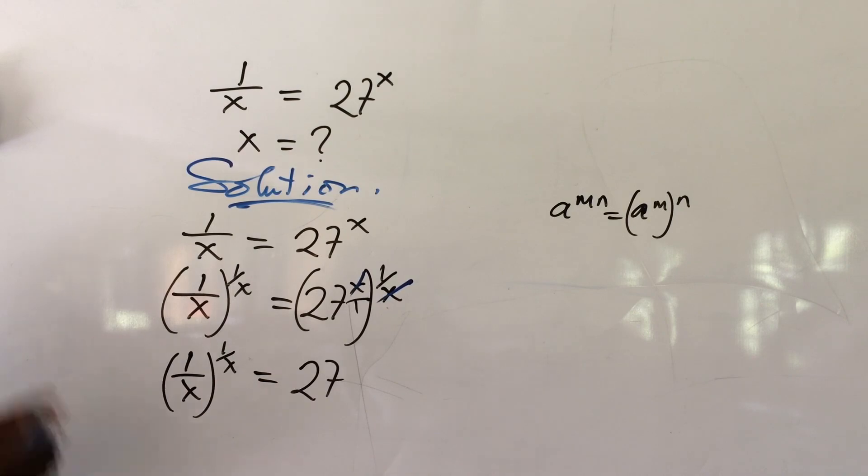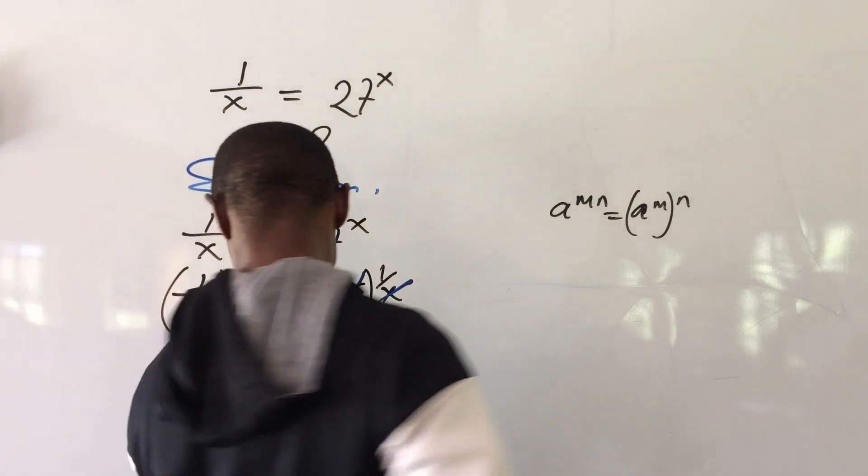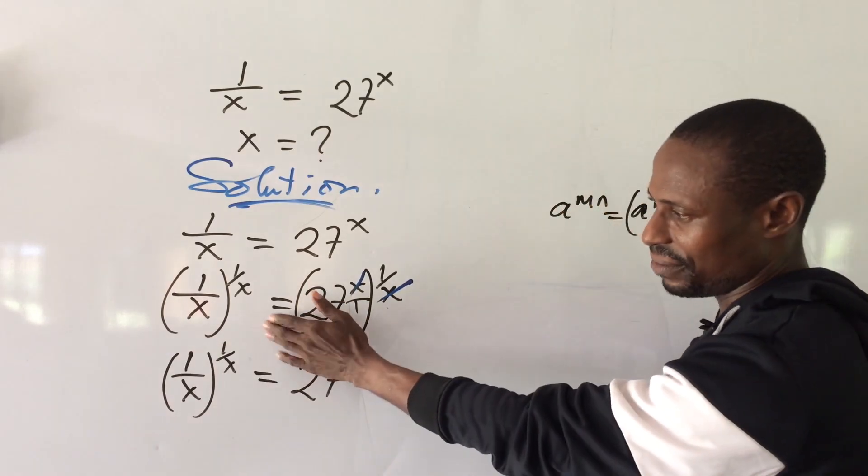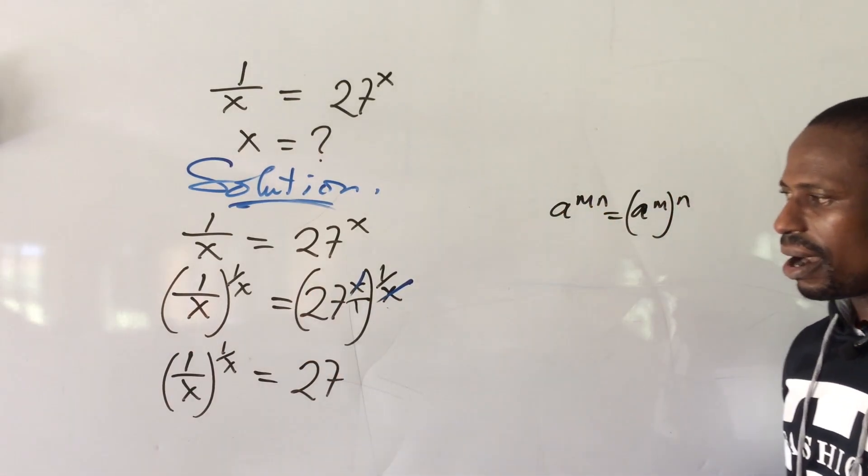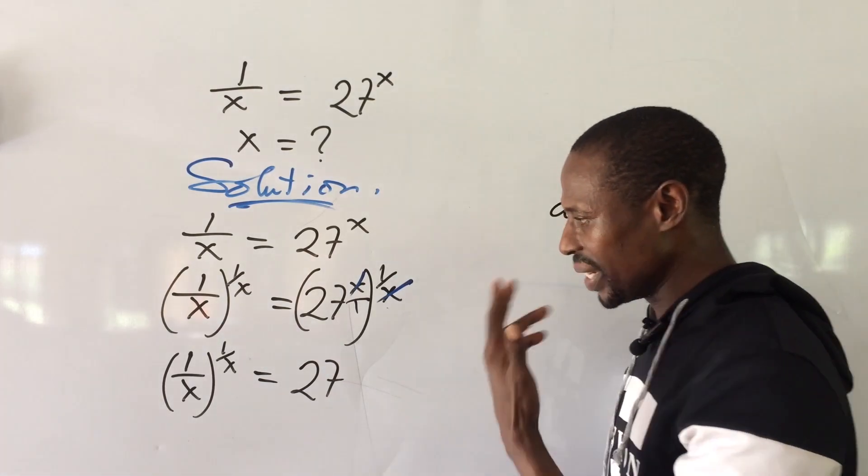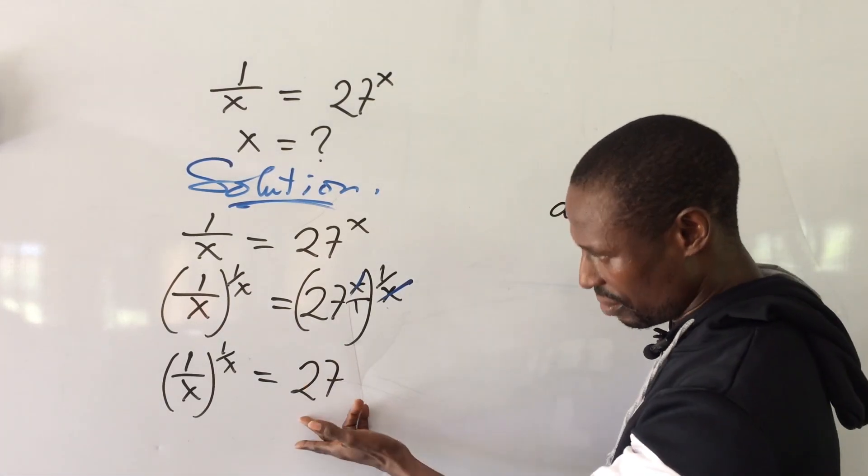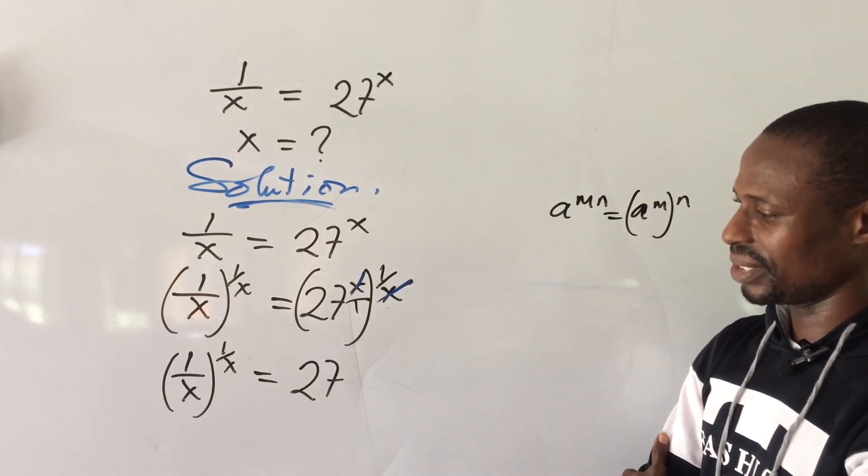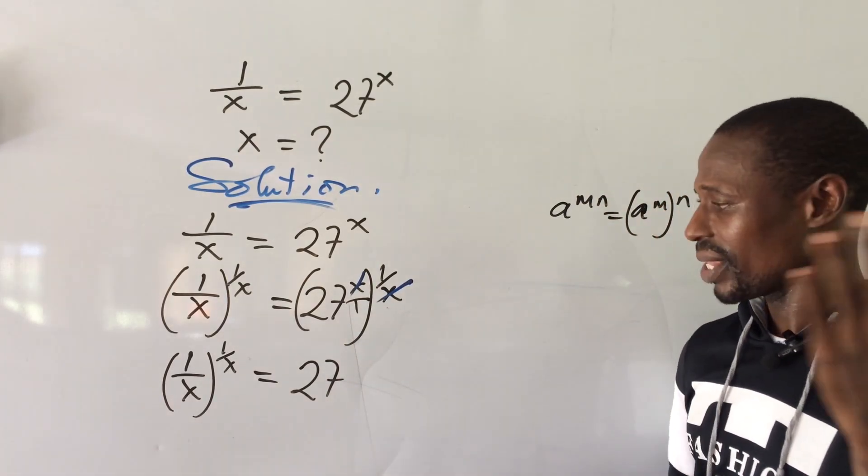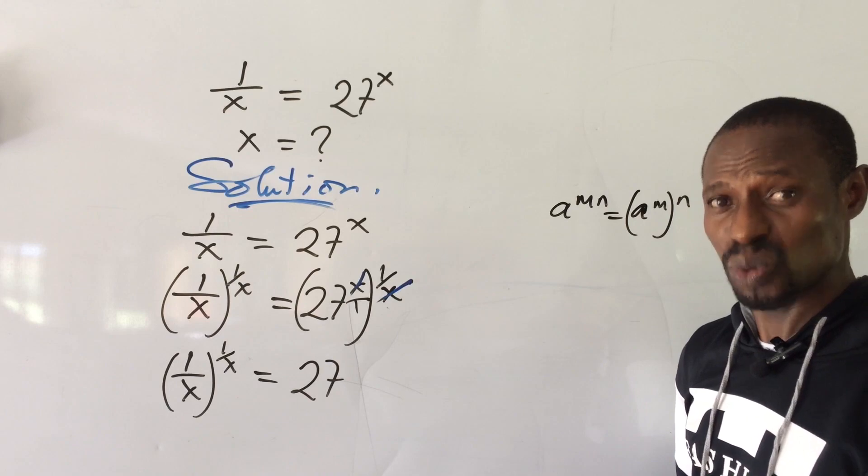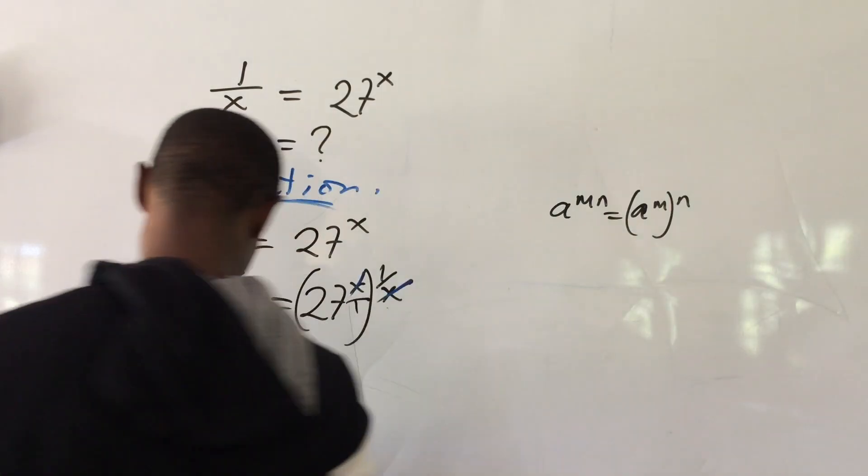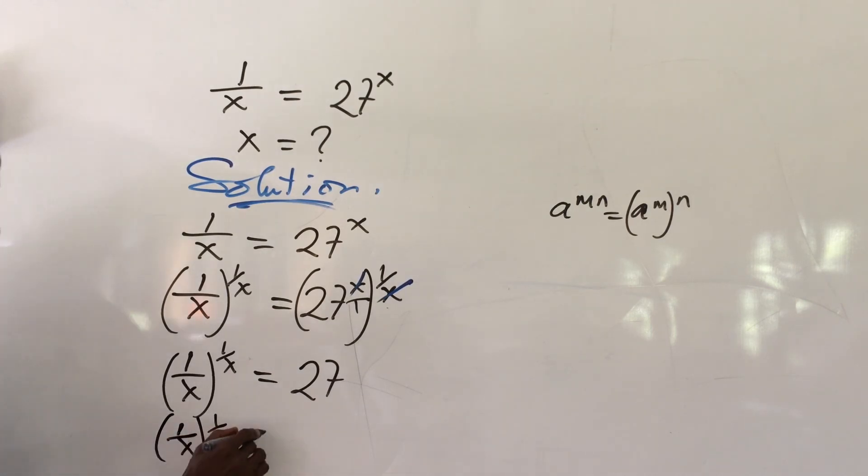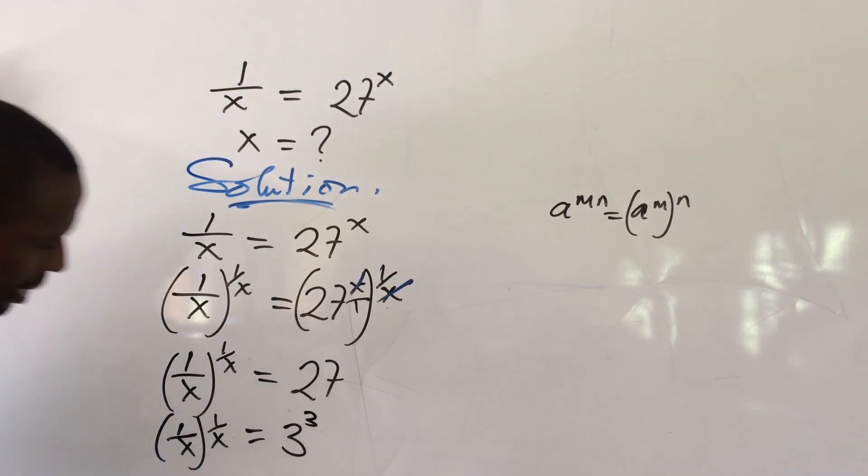Now something comes to mind here. We're having the base raised to itself here and we can think of bringing out a number that we can raise to itself to give us 27. What could that be? That is three. Three to the power of three will give us 27 and so we can rewrite this as 1 all over x raised to the power of 1 all over x equal to 3 to the power of 3.